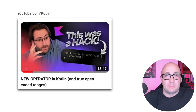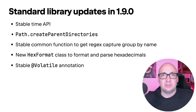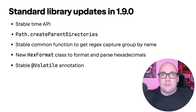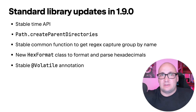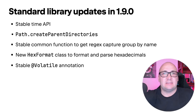Now let's see what happened to the standard library. The stabilization story continues: parts of the time API are promoted to stable, a path extension function to create parent directories has been added and is marked stable from the start. We finally stabilized regular expression group capturing by name, and the volatile annotation is now stable. And we couldn't resist adding a new experimental class — HexFormat — to format hexadecimals.